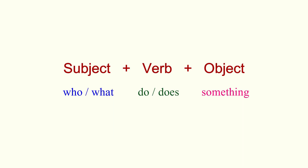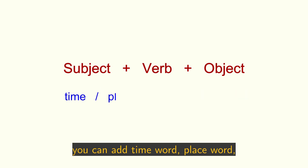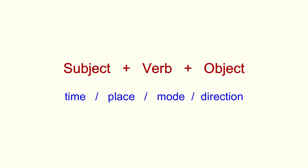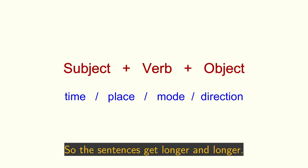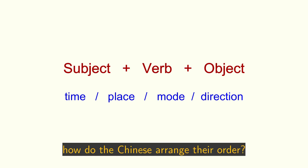On the basis of mastering this basic structure, you can add time word, place word, mode word, and direction word. So the sentences get longer and longer. If these elements appear in a sentence at the same time, how do the Chinese arrange their order? Let's look at an example.